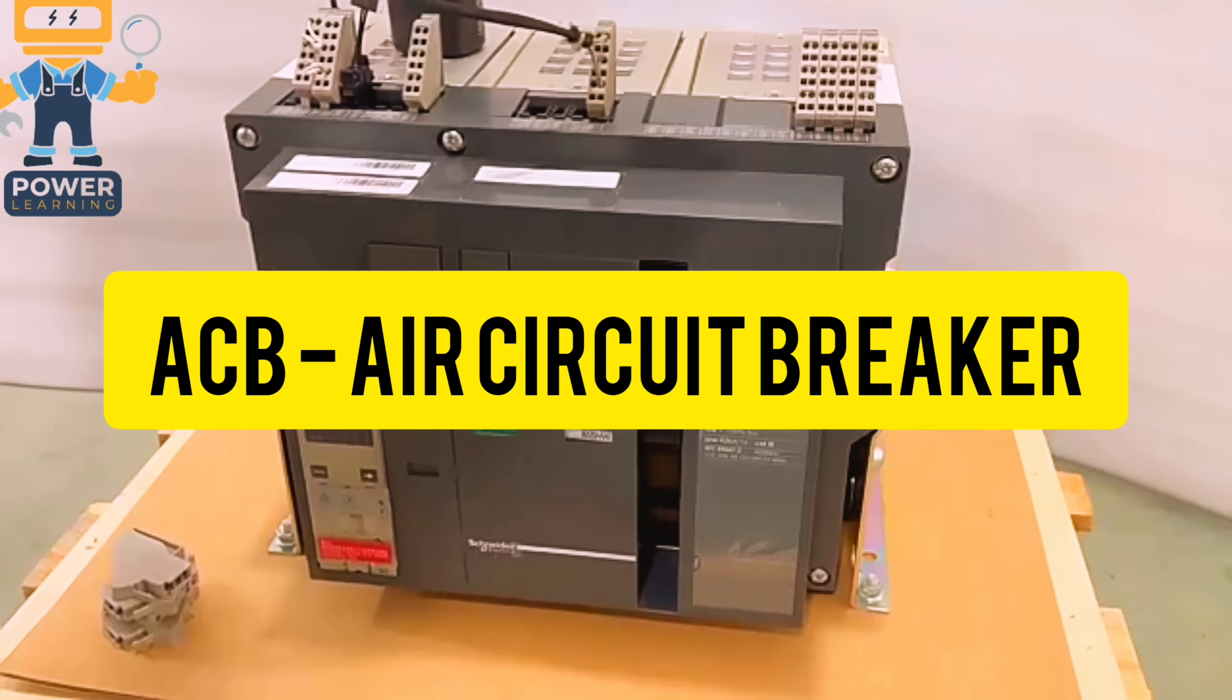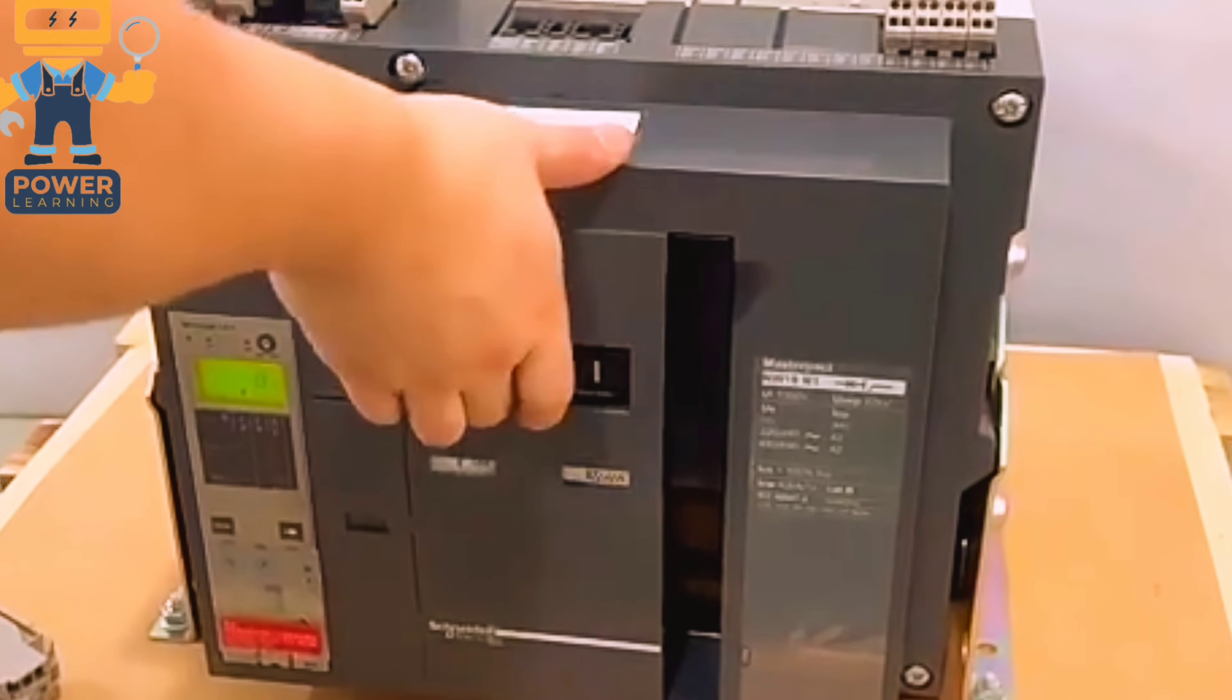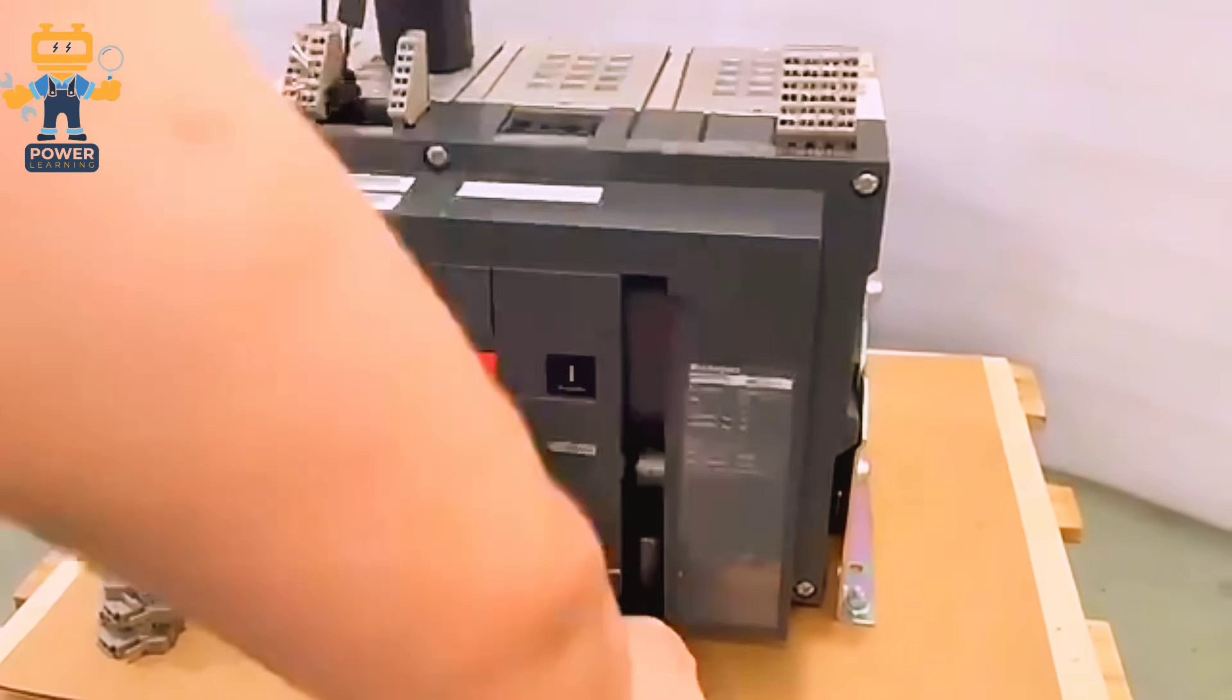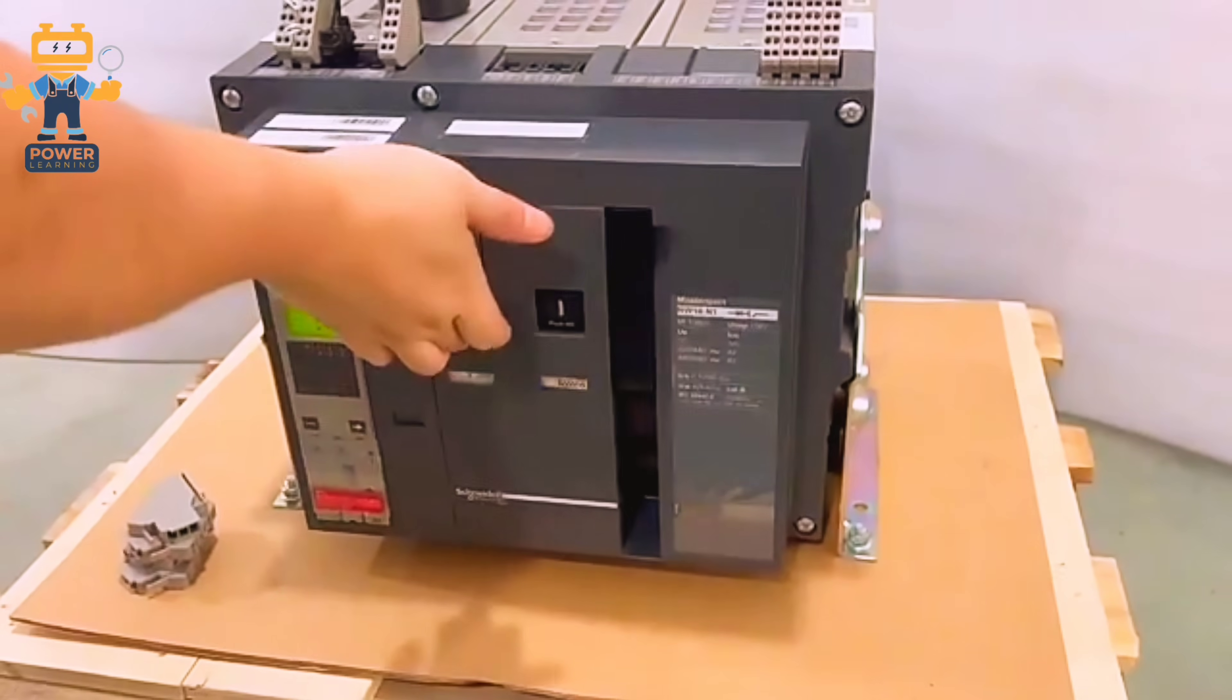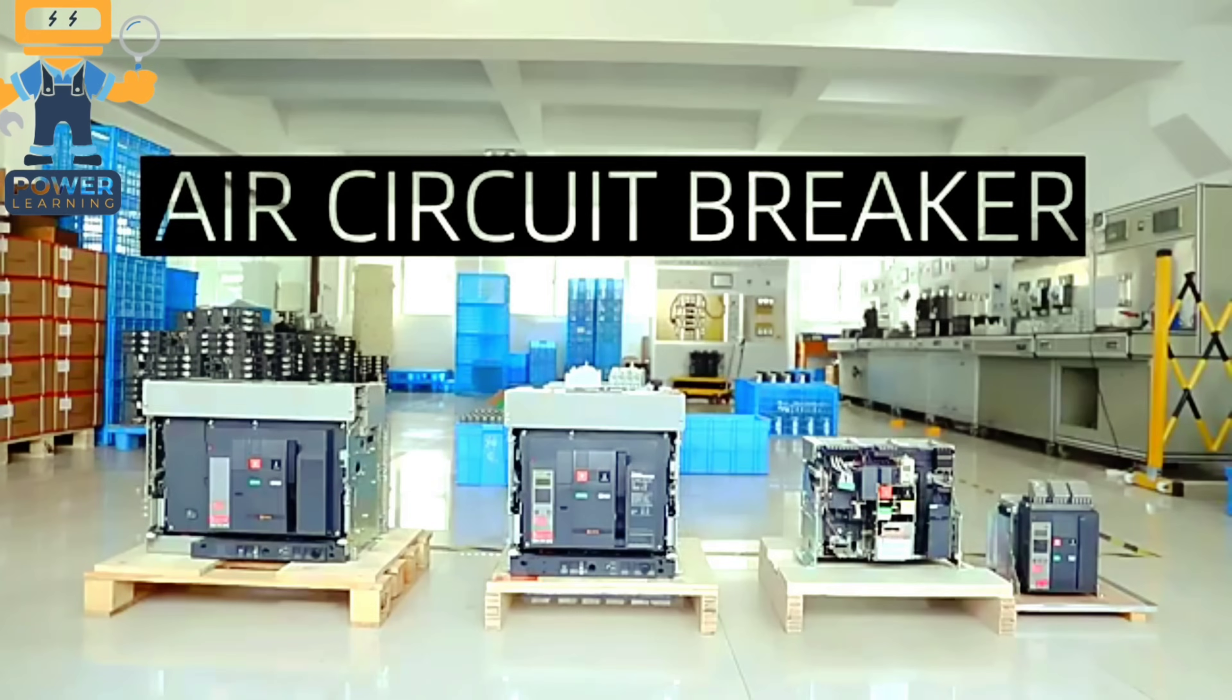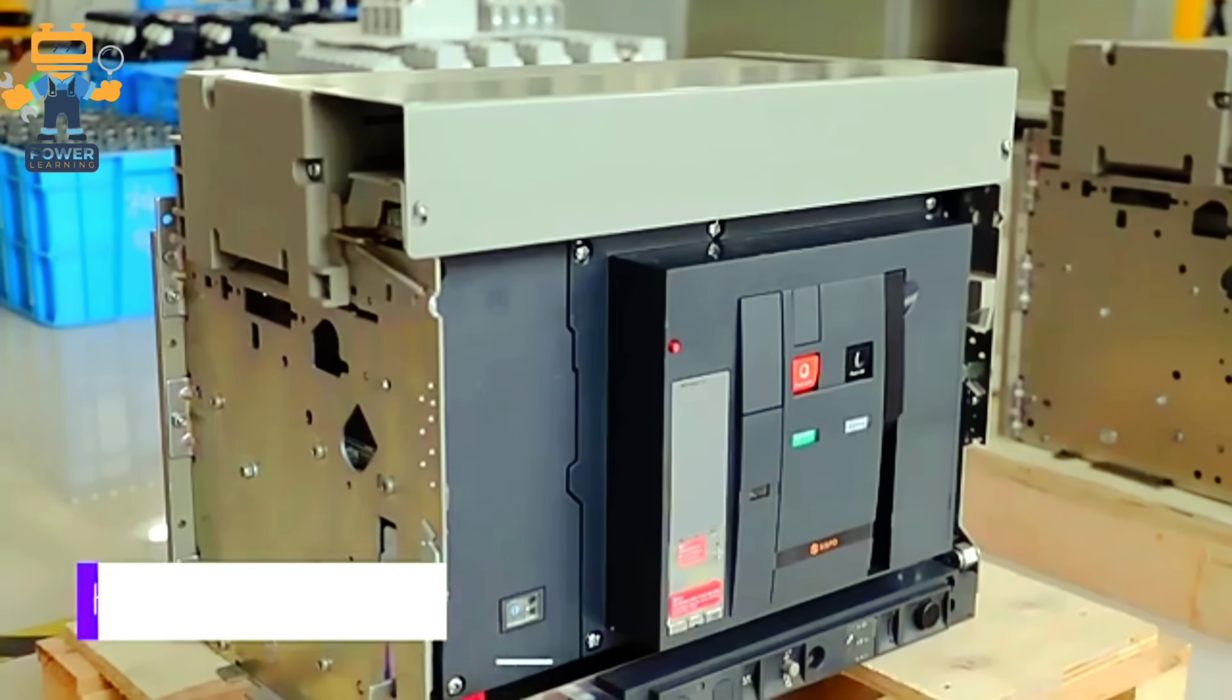In this video we will watch about the complete wiring diagram of ACB, types of ACB, what are the accessories used in ACB, how to operate manually and how to operate automatically. If you watch this video completely, in the end you will learn how to operate this complicated type of ACBs very easily.